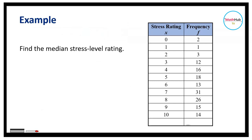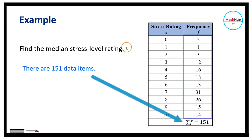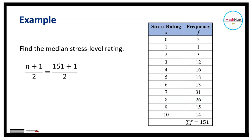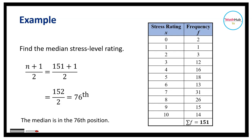The position formula is very useful, especially when dealing with grouped data sets. Using the frequency distribution for the stress level rating from the previous exercise, suppose we want to find the median stress level rating. Since there are 151 data items total — that is the sum of the frequency column — n equals 151. Using the position formula: 151 plus 1 divided by 2 equals 152 divided by 2, which equals 76. Therefore, the 76th position is the median.